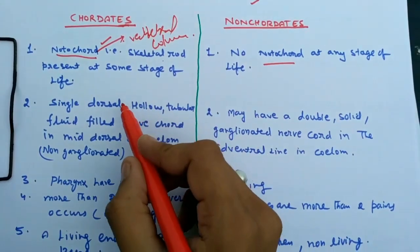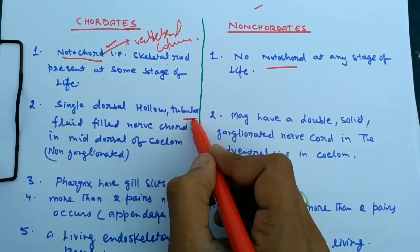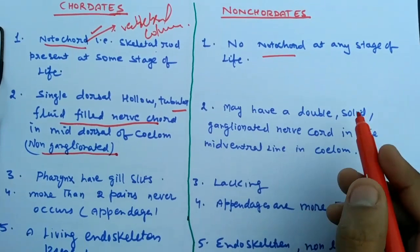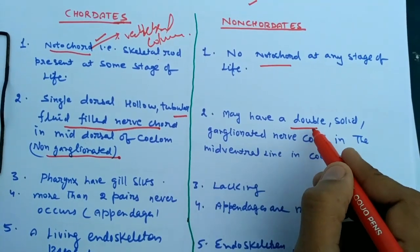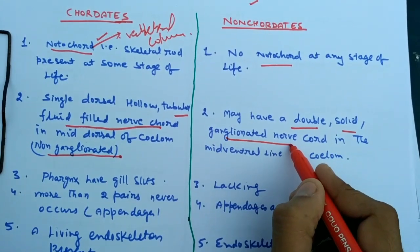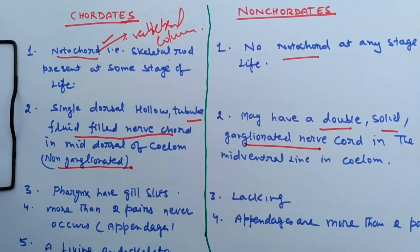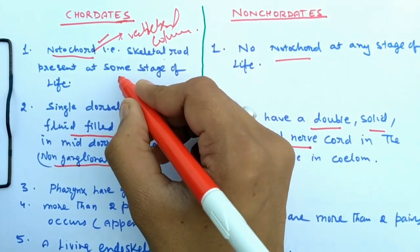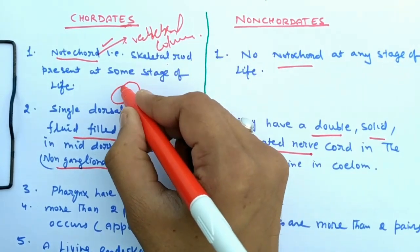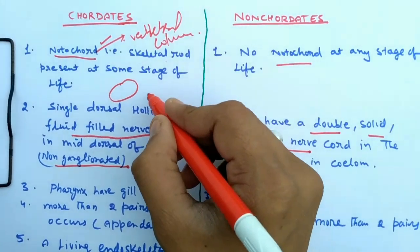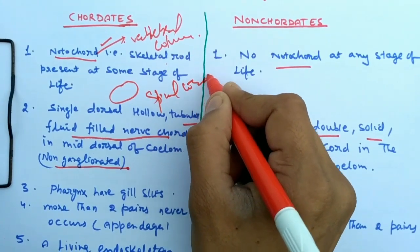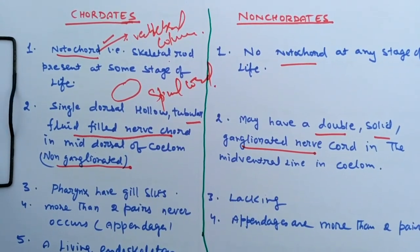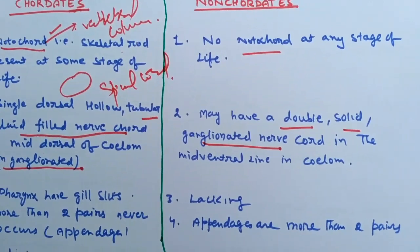The second difference: chordates have a single dorsal hollow tubular fluid-filled nerve cord, while in the case of non-chordates it may be double, solid, and gangliated. In chordates, this nerve cord is housed in the central canal of the vertebra, and in advanced stages it forms the spinal cord. It is filled with cerebrospinal fluid derived from the brain during development.